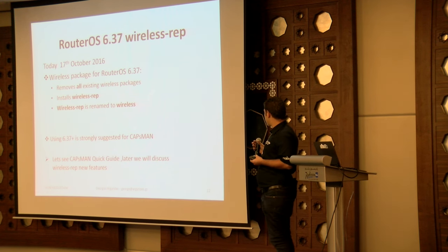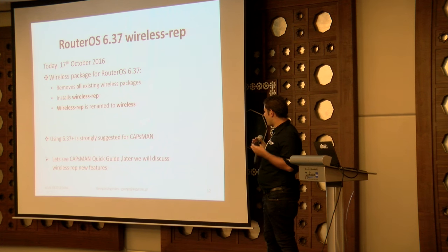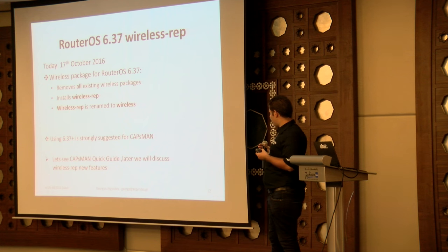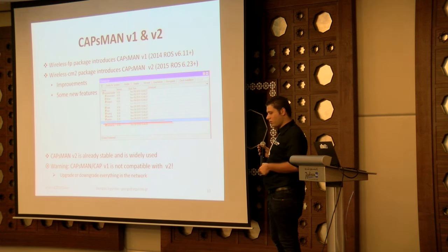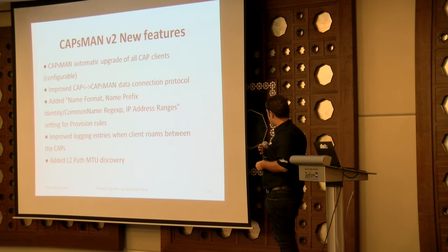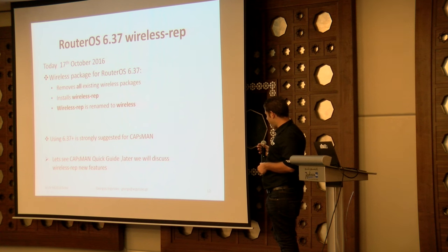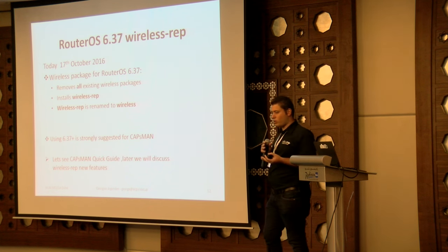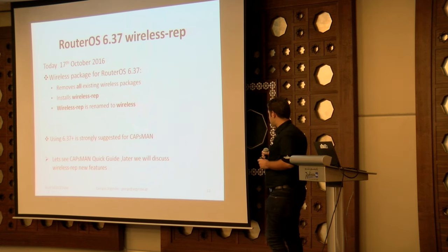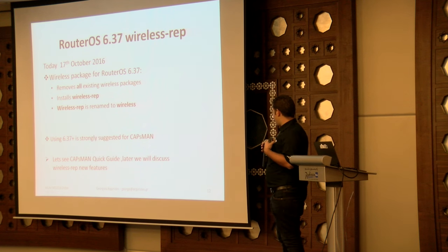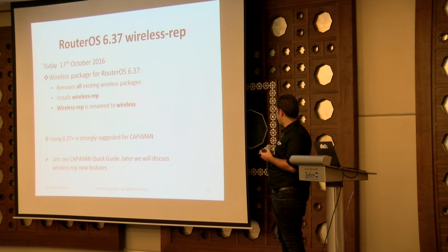Regarding the wireless rep package today: it's renamed as just the wireless package. You will not see it anymore as wireless CM2 or wireless FP — it will just be wireless, but it will be wireless rep. It will remove all existing wireless packages. Why? Because you don't need all those packages. The latest version has all features and no bugs. I strongly recommend using the latest version 6.37 to get rid of FP, CM2, and previous versions, and to see the new features of wireless rep.